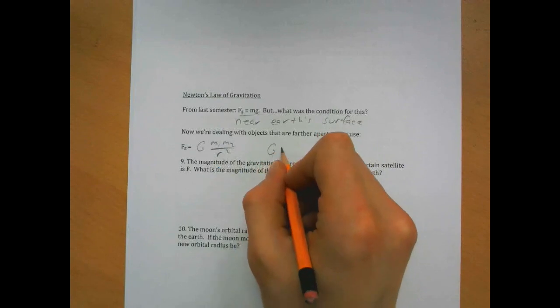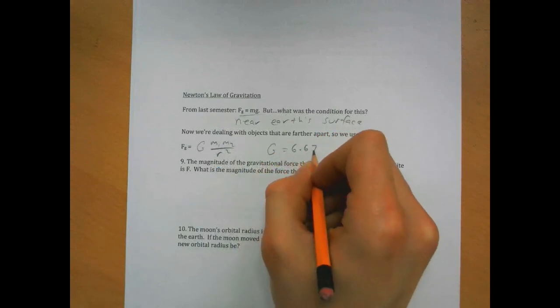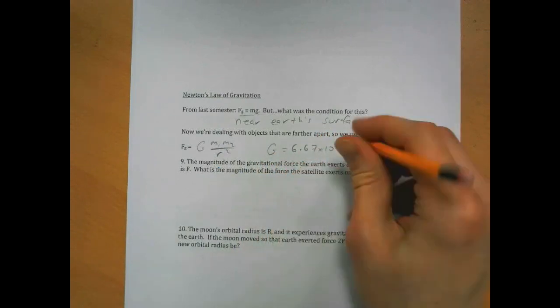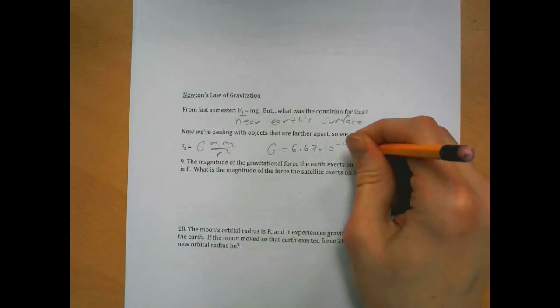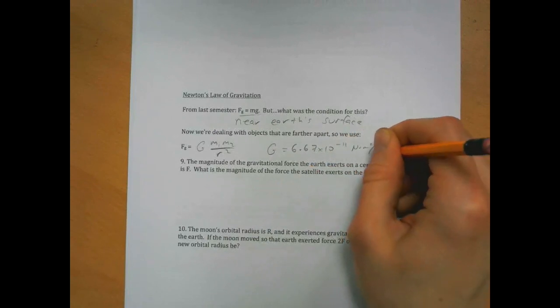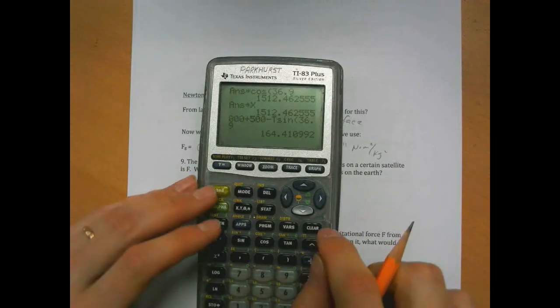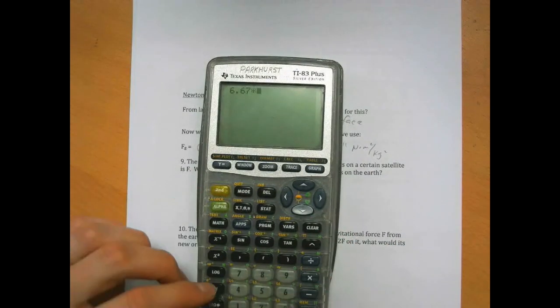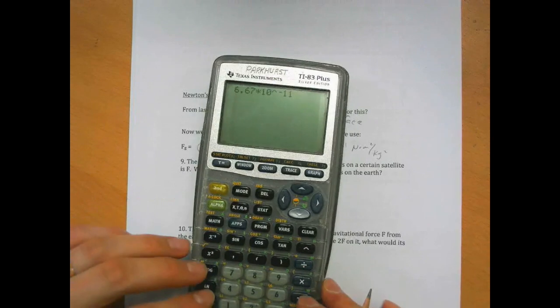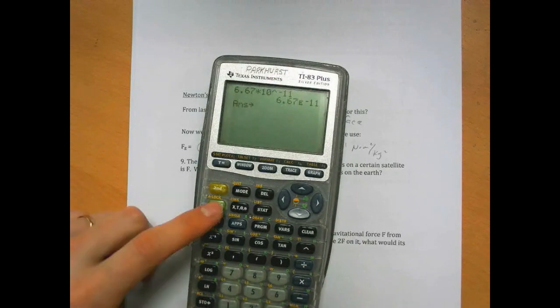I recommend right this moment, take out your calculator. G is 6.67 times 10 to the minus 11th newton meters squared per kilogram squared. Take out your calculator, go 6.67 times 10 carat negative 11, and store that value as g.